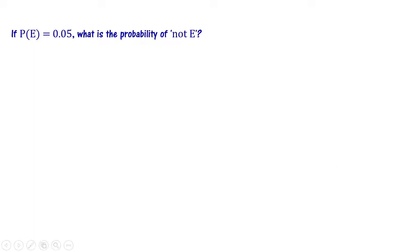If P(E) is equal to 0.05, what is the probability of not E? This is a probability question. The probability of event E is given as 0.05. What is the probability of not E?